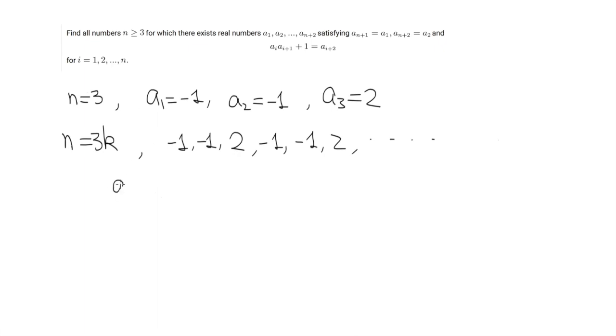We have this relationship of a_i times a_{i+1} plus 1 equals a_{i+2}. The idea is to multiply this relationship first by a_{i+2} for both sides. By doing that, we get a_i a_{i+1} a_{i+2} plus a_{i+2} equals a_{i+2} squared.